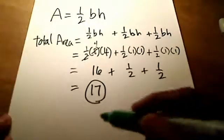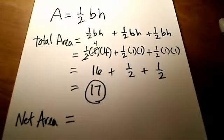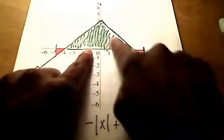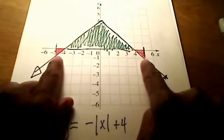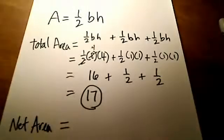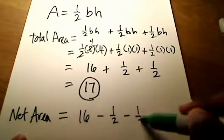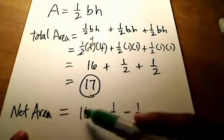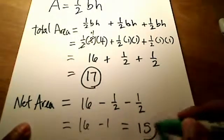Now, if I'm interested in the net area, the formula changes a little. Any area above the x-axis — like the green triangle — is positive. Anything below the x-axis — like the two red triangles — is negative. So for net area it's 16 minus one-half minus one-half, which is 16 minus 1, giving a net area of 15.